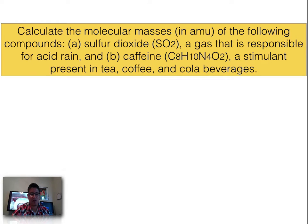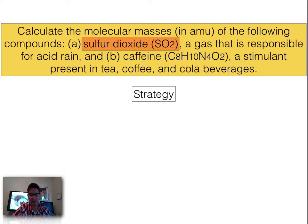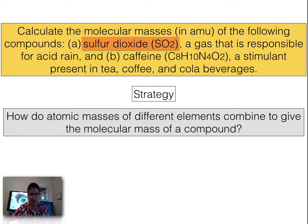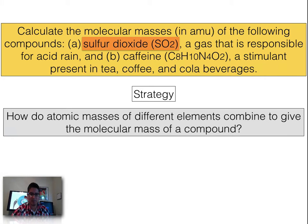Calculate the molecular mass of the following compounds. First we're going to look for the molecular mass of sulfur dioxide, a gas responsible for acid rain, and then caffeine, a much larger molecule and stimulant present in tea, coffee, and cola beverages. Our strategy for finding molar mass: how do atomic masses of different elements combine to give the molecular mass of a compound? The key idea is the combined mass of each element present in the molecule.